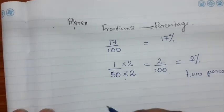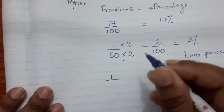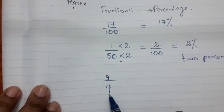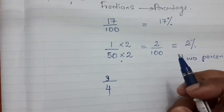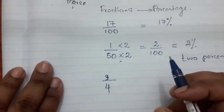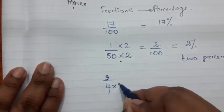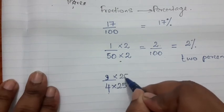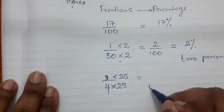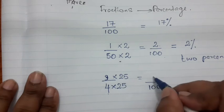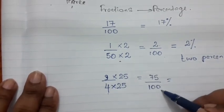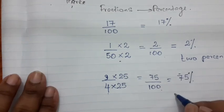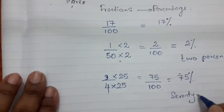Let's take another example: 3 over 4. The denominator is 4, so we need to find what number to multiply it by to get 100. We multiply by 25, since 4×25 = 100. The numerator must also be multiplied by 25: 3×25 = 75. So we obtain 75/100, which is 75%.